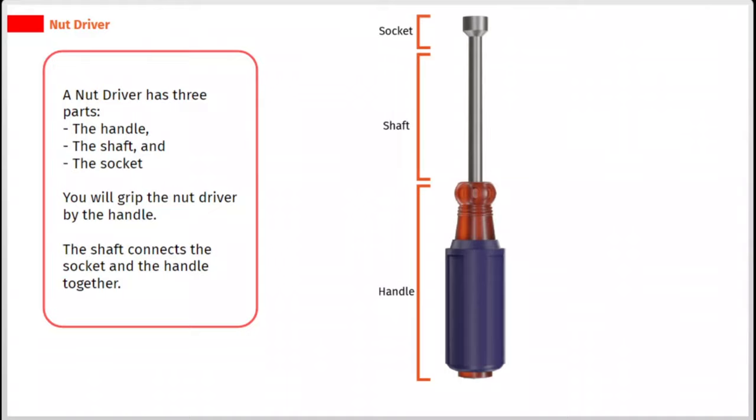A nut driver has three parts: the handle, the shaft, and the socket. You will grip the nut driver by the handle. The shaft connects the socket and the handle together.